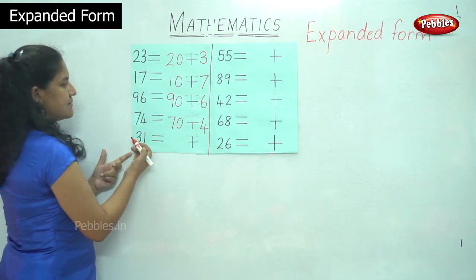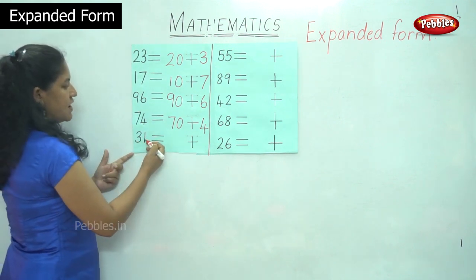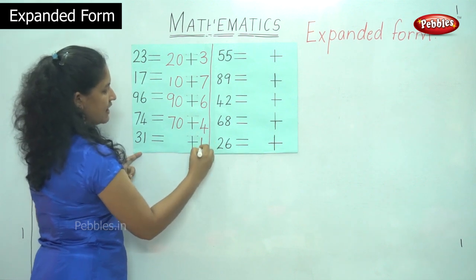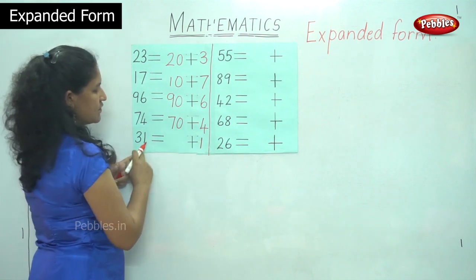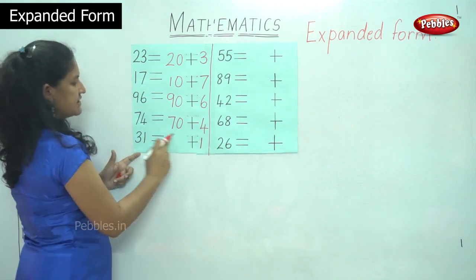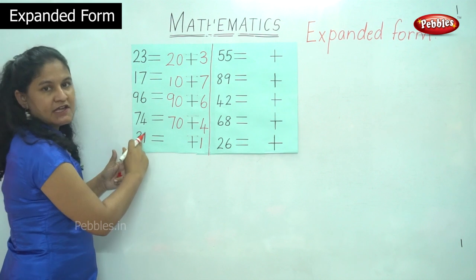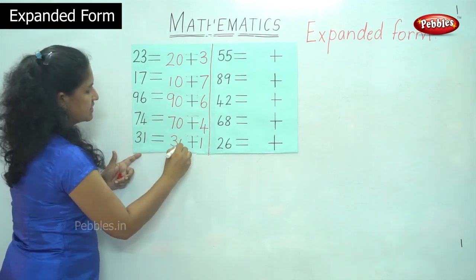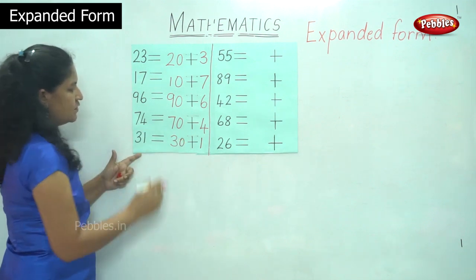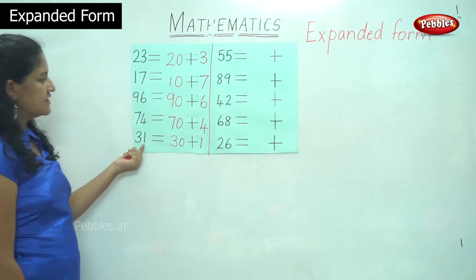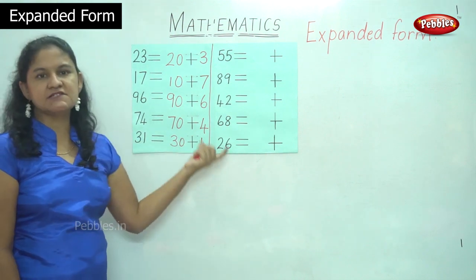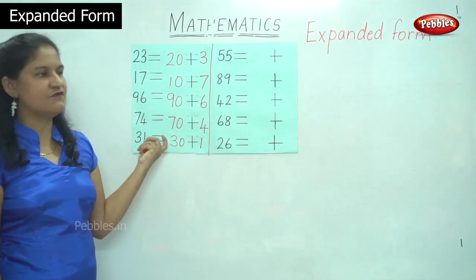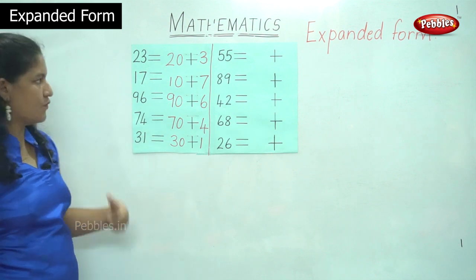The next number is number 31. In the ones place I have 1, and in the tens place I have 3. 3 tens is number 30. So 31 is equal to 30 plus 1 — that is the expanded form for the number 31.